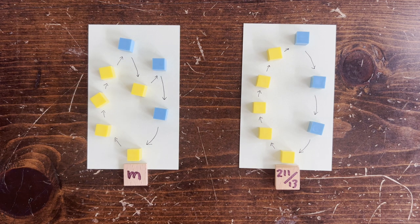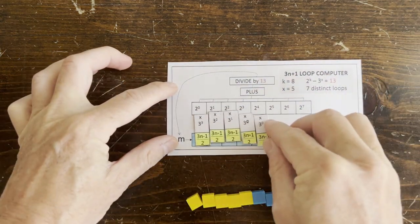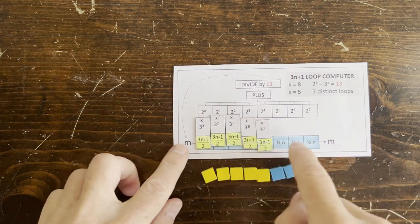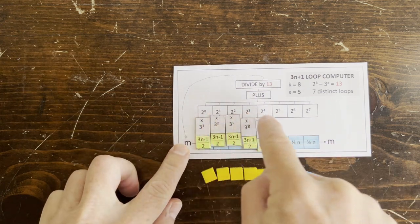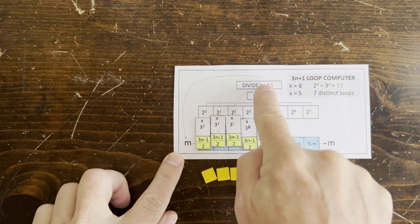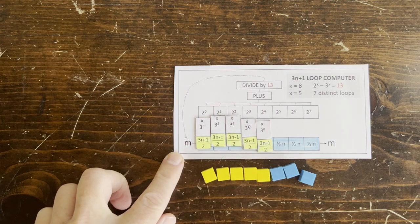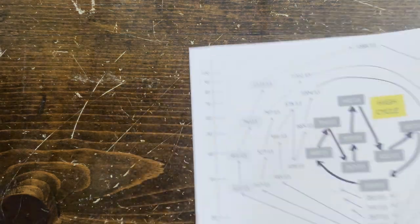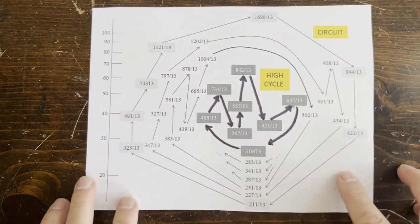To figure out what this number is, we previously used this analog computer. We put the pieces where the up moves are, then multiply increasing powers of 2 by decreasing powers of 3, add them all up, and divide by 2 to the k minus 3 to the x. Doing that, we can get the values for all the members of all the loops of length 8 with 5 up moves.